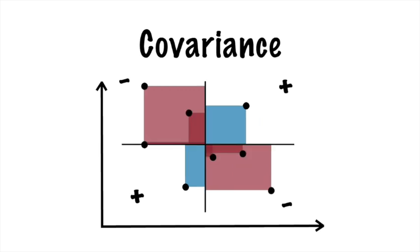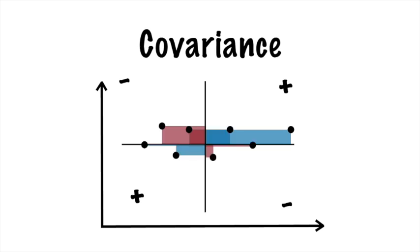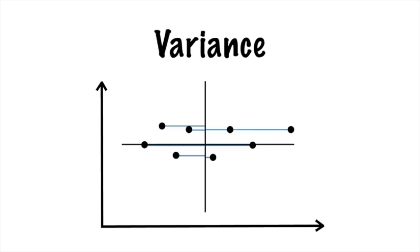A dataset with more negative trend will have a negative covariance. A dataset with spread only in one dimension will have a low covariance. If you only measure spread along one axis, you are actually measuring variance, which can also be written as the covariance of that dimension with itself.